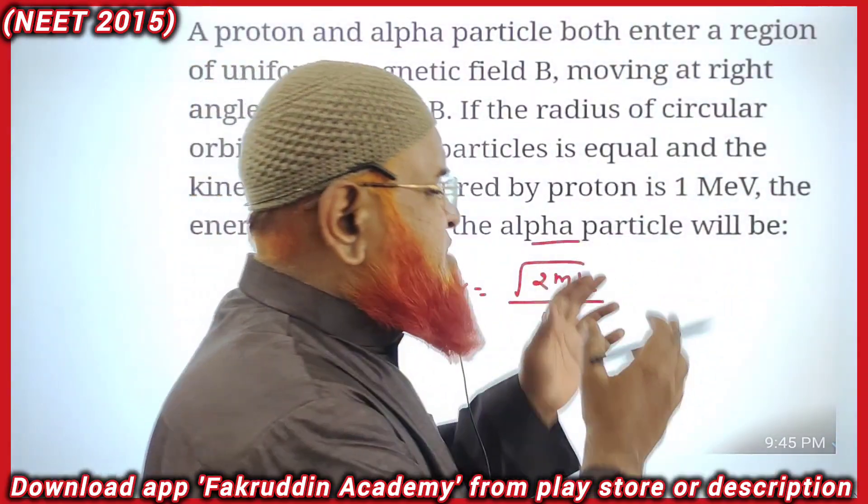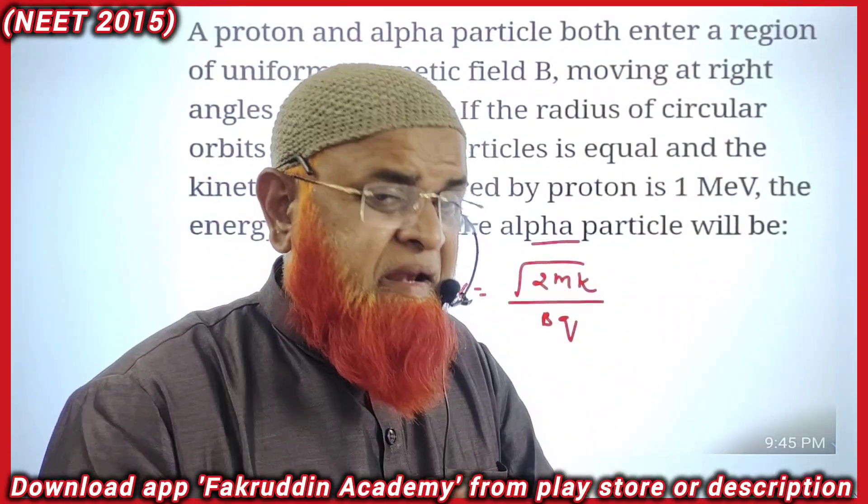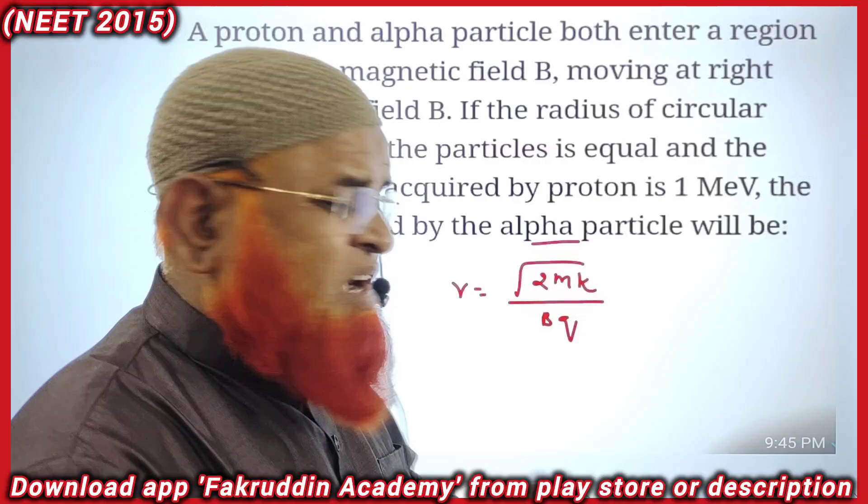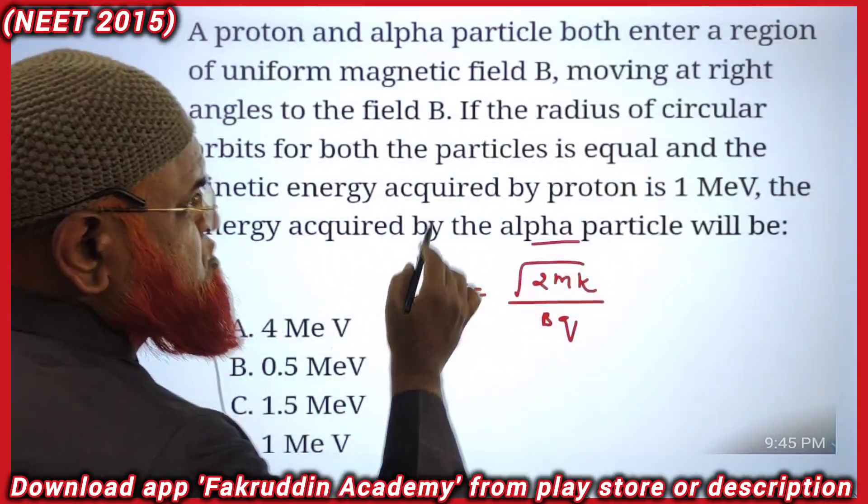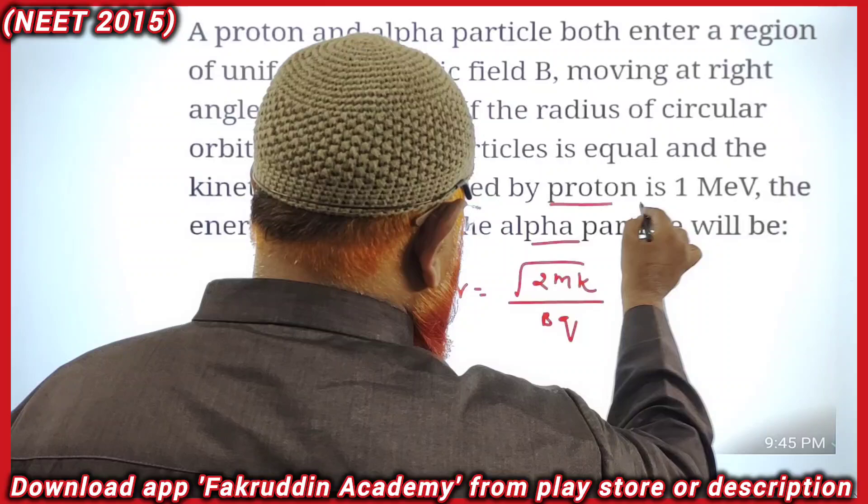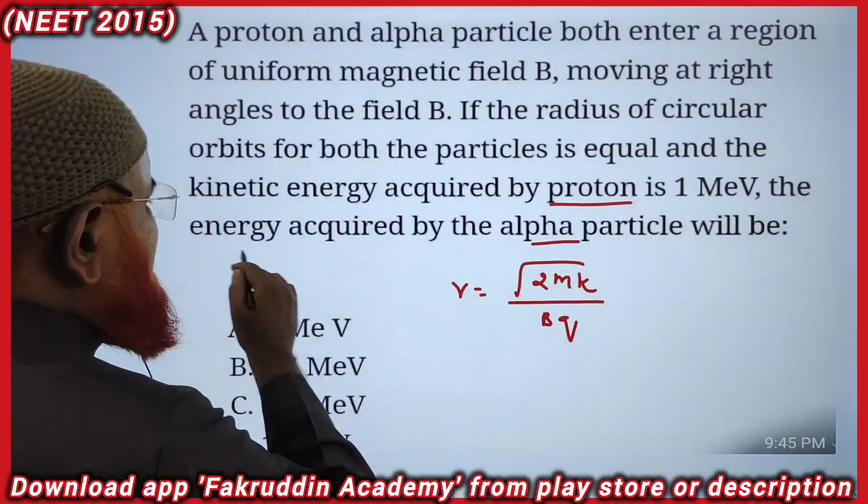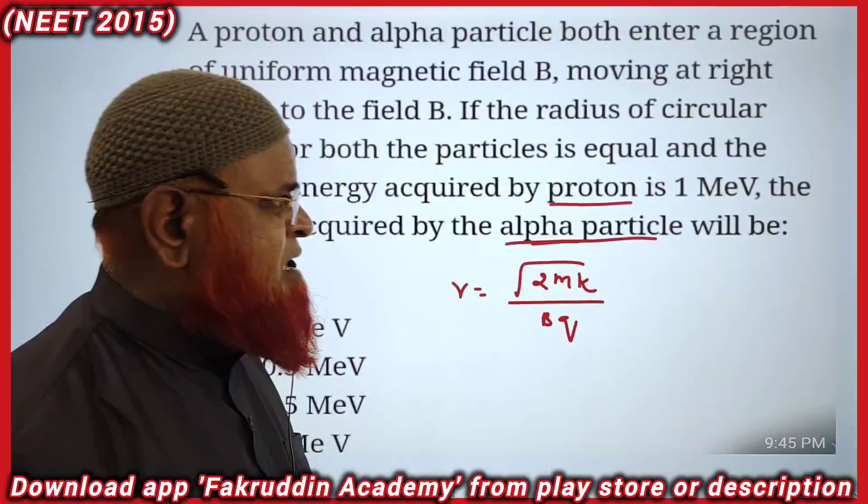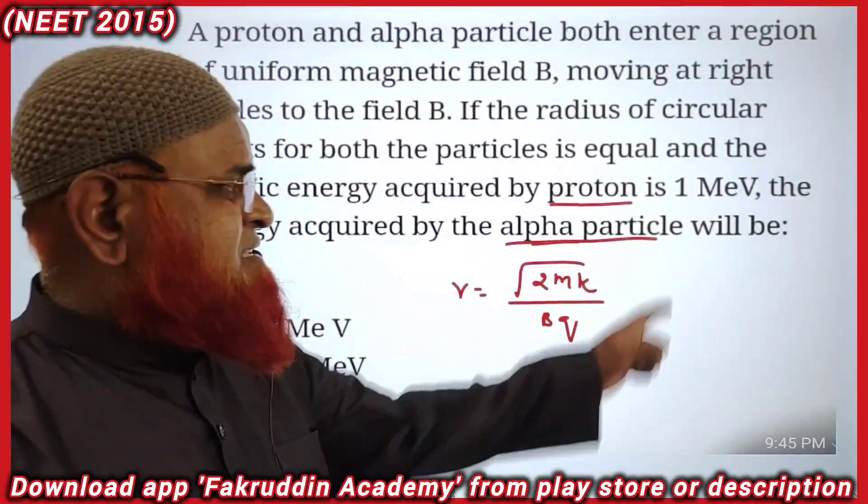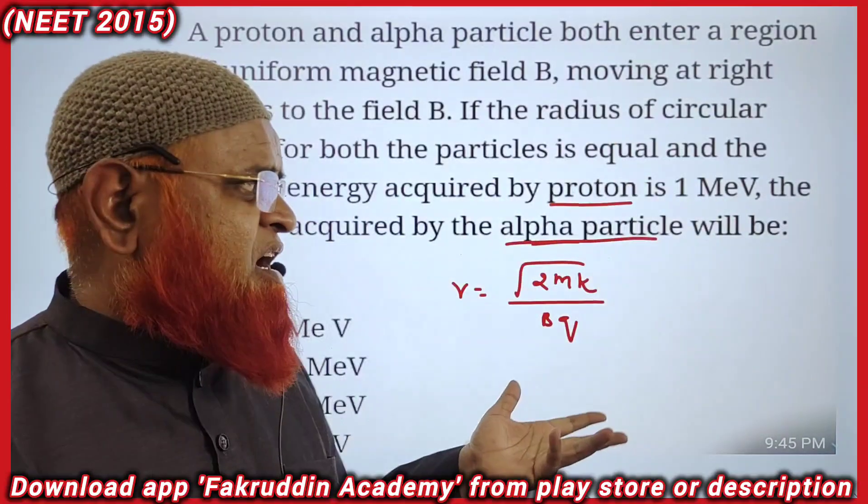My dear students, this is a previous year question asked in NEET. In this question, there are two particles: one is a proton, the other is an alpha particle. It is given that the kinetic energy of the proton is 1 million electron volts.